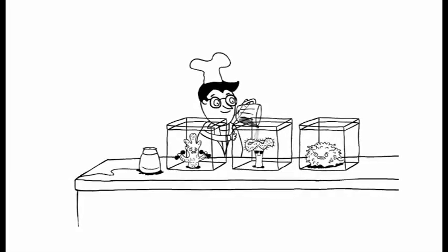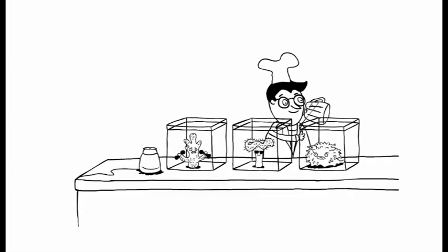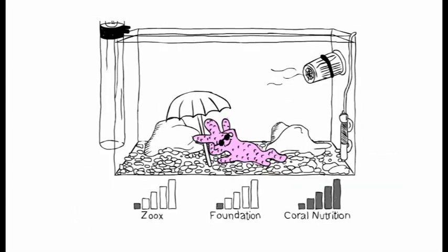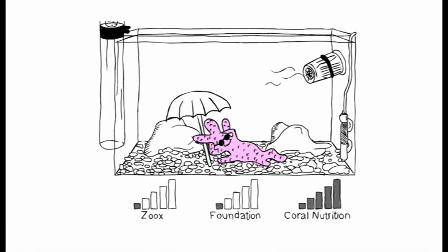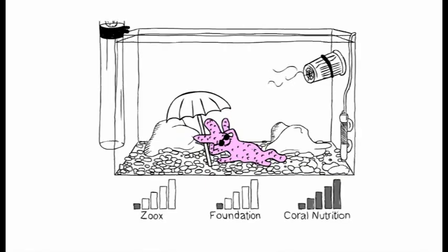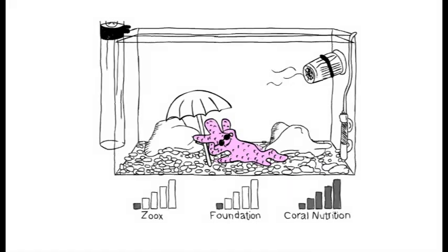We discovered that while there are some differences in the nutritional requirements between the different types of corals, the most significant differences were in low algae nutrient systems, where increased amounts of coral nutrients are required to compensate for the lower supply of energy from the zooxanthellae.